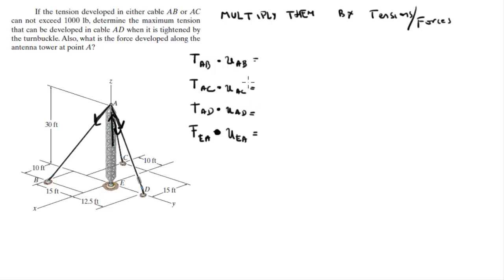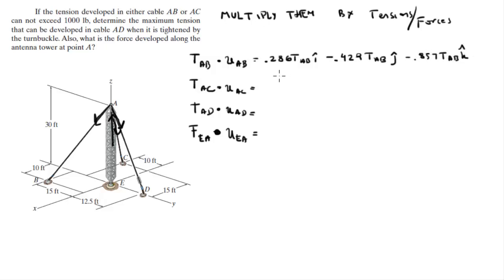This gives the Cartesian vector form of each force. The first: (0.286·T_AB)i − (0.429·T_AB)j − (0.857·T_AB)k. The second: −(0.429·T_AC)i − (0.286·T_AC)j − (0.857·T_AC)k. The third for AD contributes (0.385·T_AD)j − (0.923·T_AD)k, and F_EA acts in the +k direction.